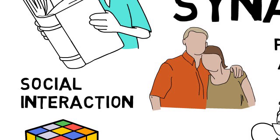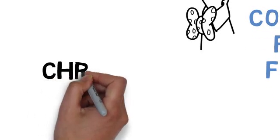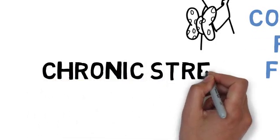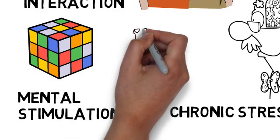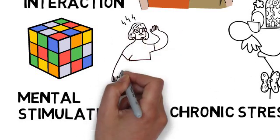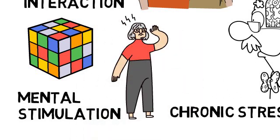While neuroplasticity is a powerful tool for adaptation and recovery, certain conditions can impair it. Chronic stress can negatively impact neuroplasticity by increasing the production of stress hormones, which can damage neurons and hinder the formation of new connections.